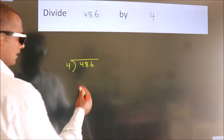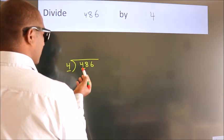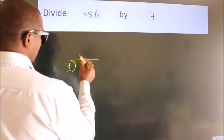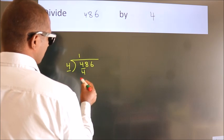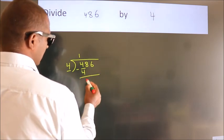Next, here we have 4, here 4. When do we get 4? In the 4 table: 4 once is 4. Now we should subtract. We get 0.